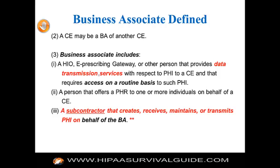There is a conduit exception for ISPs and wireless networks — those aren't business associates. So interoperability data transmission providers are business associates. Also, a business associate is a person or entity that offers a PHR — a personal health record — to one or more individuals on behalf of the covered entity. For example, if Microsoft Health Vault is attached to the covered entity's EHR, then Microsoft would be a business associate of that covered entity. Finally, under the omnibus rule, a subcontractor of a business associate that creates, receives, maintains, or transmits PHI on behalf of the business associate is also a business associate.